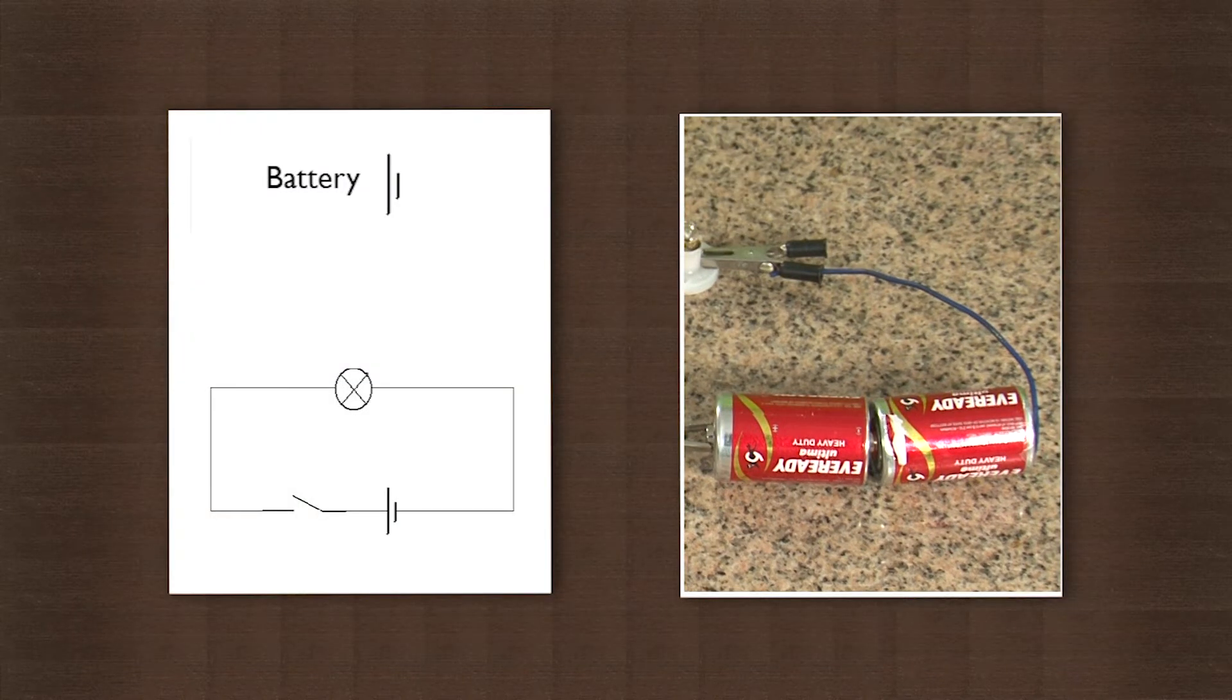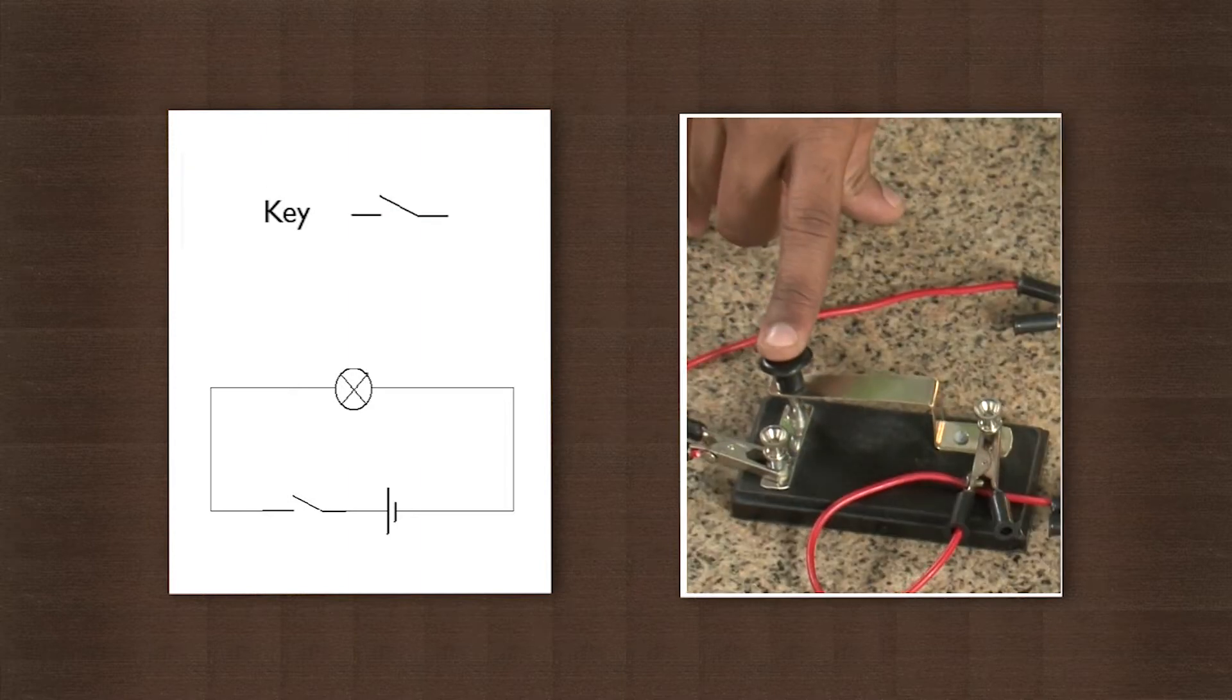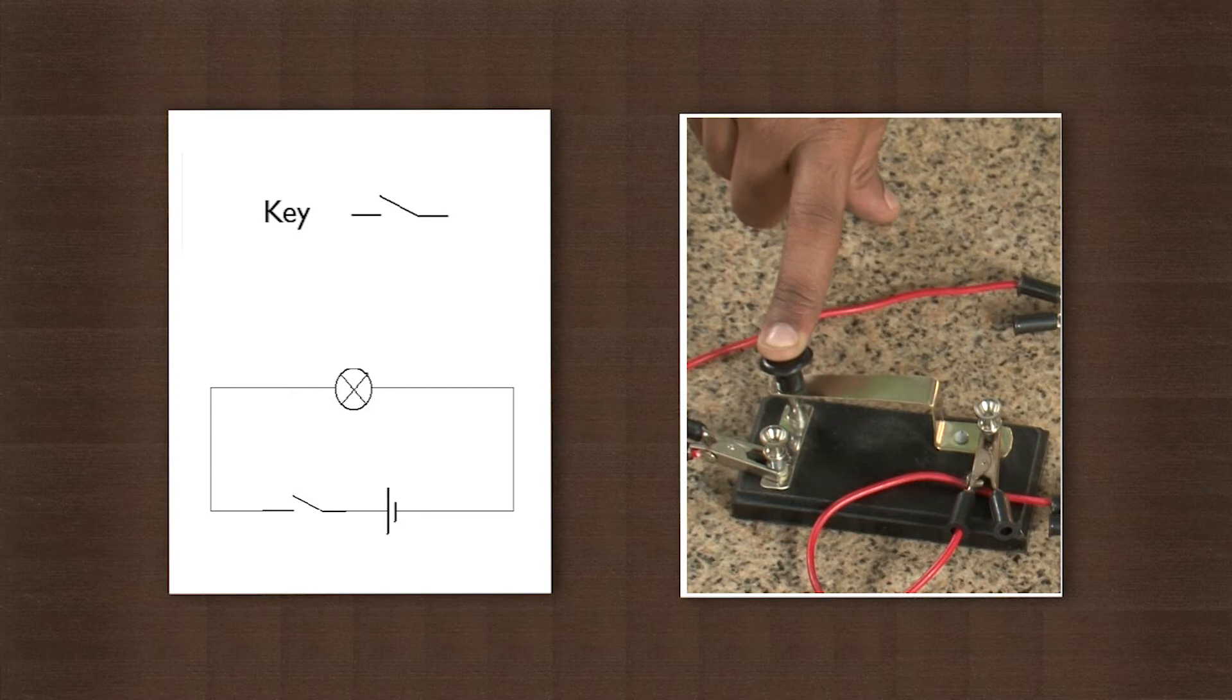First we will start with a source of electricity or a battery which is represented like this. This will be followed by this key which controls the flow of electricity. The key normally follows a cell since we want the flow of electricity to be controlled right at the source.